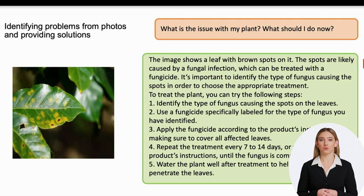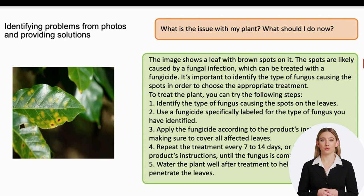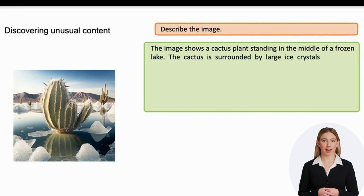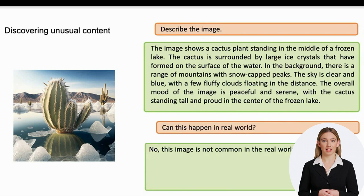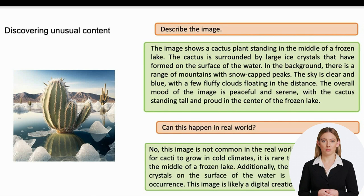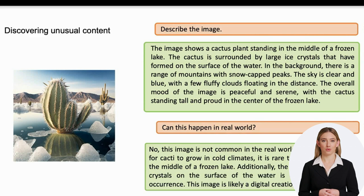This feature can be very useful for emergency situations — like imagine when your car breaks down and you don't have access to a mechanic. At least you can understand what is wrong with your car. In another example, the AI tool was asked to describe a photo, and it did a good job recognizing and describing the elements in the image. It was also asked if a cactus growing among ice crystals could happen in the real world, and the tool answered no, stating that this is probably a computer-generated image — showing an interesting detection capability.